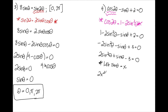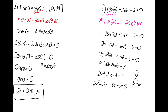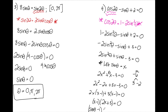I'll let sine theta equal x to make this easier to factor, rewriting as 2x squared plus x minus 3. I need two numbers that add to positive 1 and multiply to negative 6: that's positive 3 and negative 2. Splitting the middle term into positive 3x and minus 2x, I do factor by grouping. Pulling out 2x from the first two terms leaves x minus 1; pulling out 3 from the last two terms also leaves x minus 1. Factoring out x minus 1 gives (x minus 1)(2x plus 3).